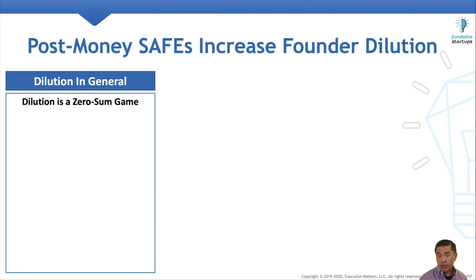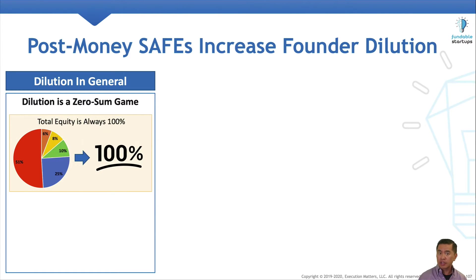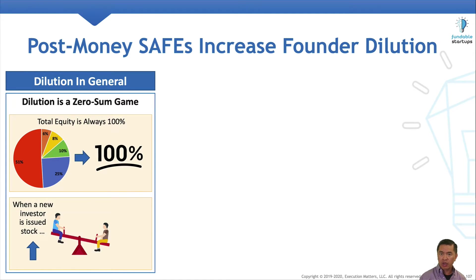To understand how a post-money safe increases founder dilution, we'll start with some general concepts. Dilution is fundamentally a zero-sum game. The total amount of equity in a startup is always 100% — no more, no less. When a new investor is issued stock, one or more existing shareholders get diluted.